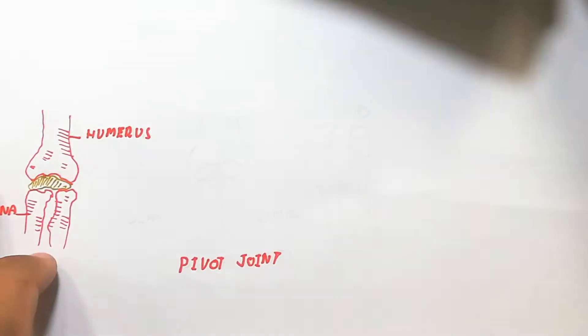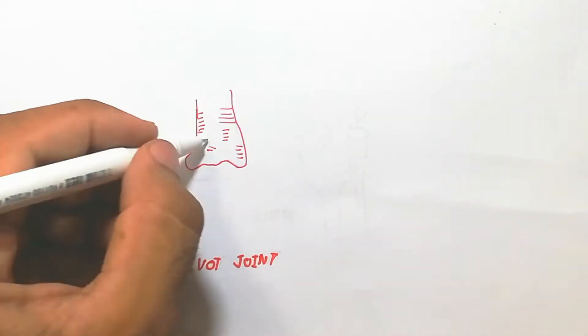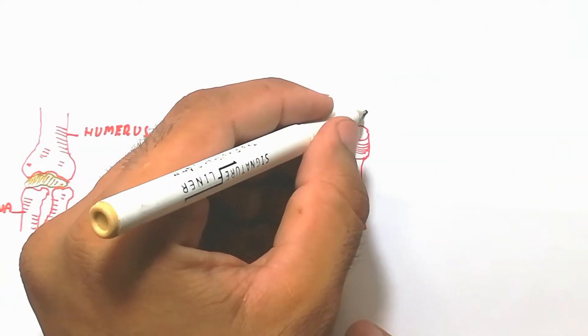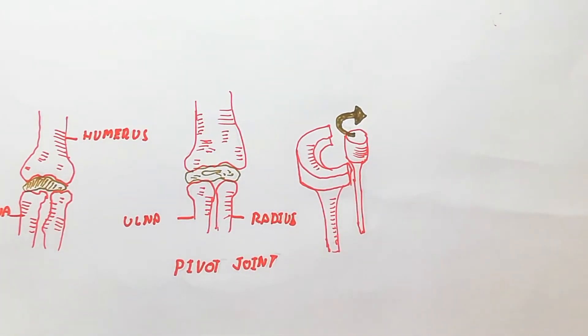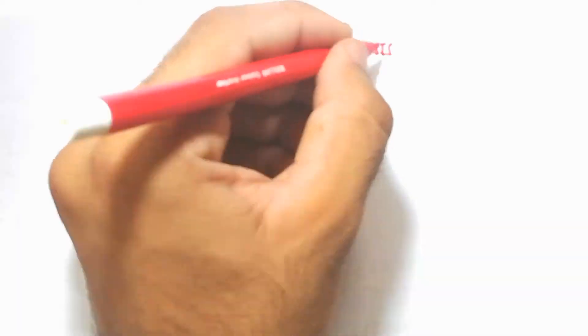Now we will talk about the pivot joint. The pivot joint means the movement is a central rotational movement. One bone is attached to another and their movement is like that. I hope you now understand the joint classification on the basis of mobility and their structure.